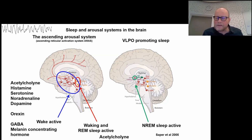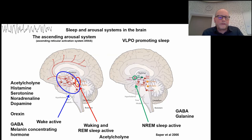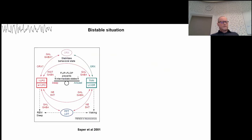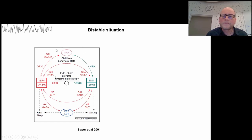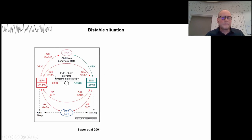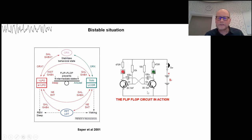On the other side we have the ventrolateral preoptic area, which promotes sleep by releasing GABA and galanin, thereby reducing activity in the wake-active areas — and when this activity is reduced, the brain falls asleep. Until around 1999 we did not know about orexin, so we just had the ventrolateral preoptic area on one hand and the wake-inducing areas on the other, keeping each other in what electronics calls a flip-flop circuit — meaning it is either awake or asleep, not somewhere in between.